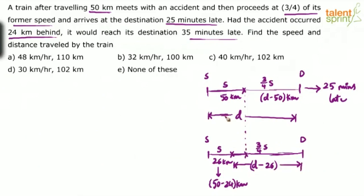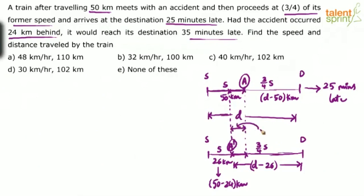The focus should be on the stretch between the two accident points. In the first case, the accident point is at 50 kilometers; in the second case it is at 26 kilometers. The distance between these two accident points is 50 minus 26 = 24 kilometers. That 24-kilometer stretch is what we need to analyze.